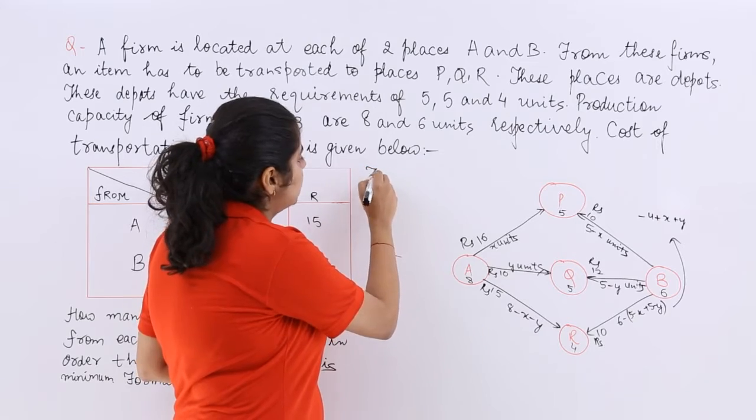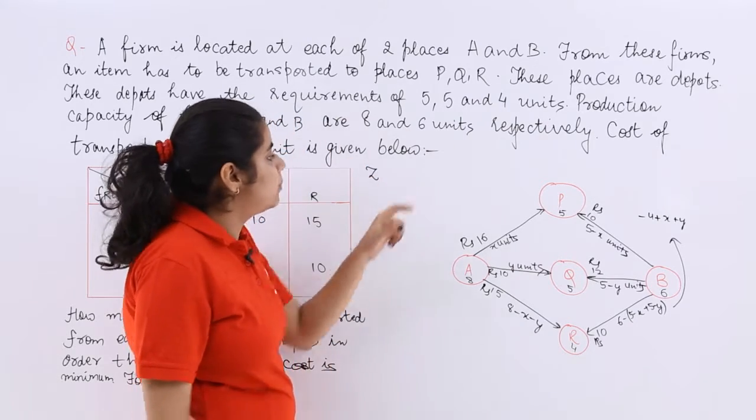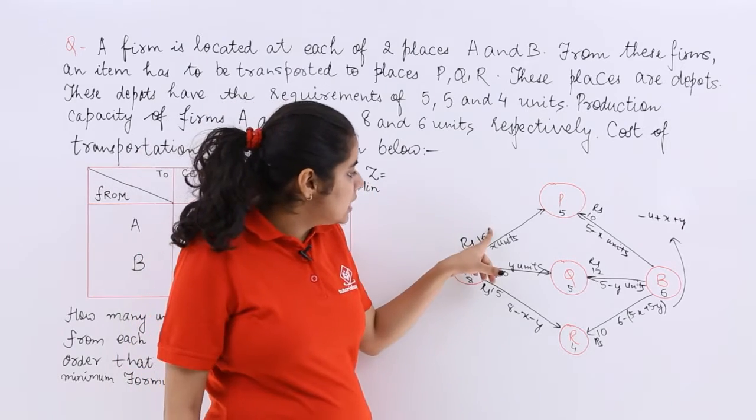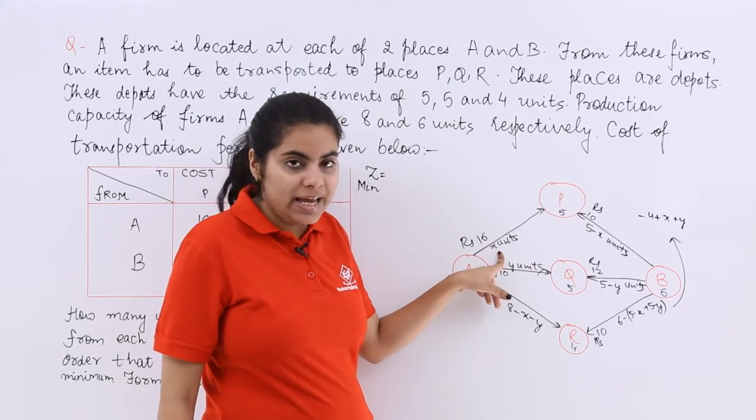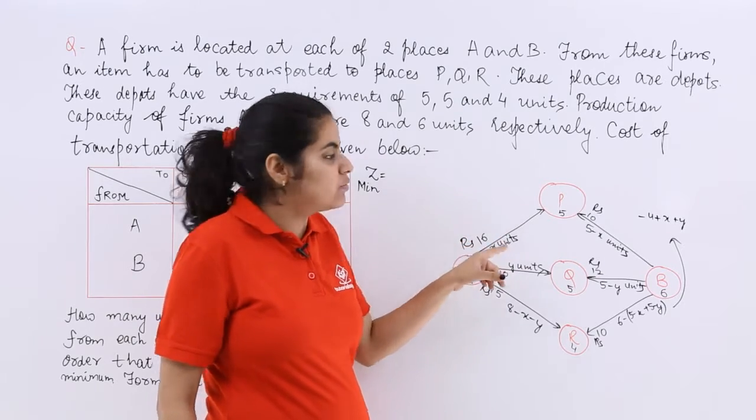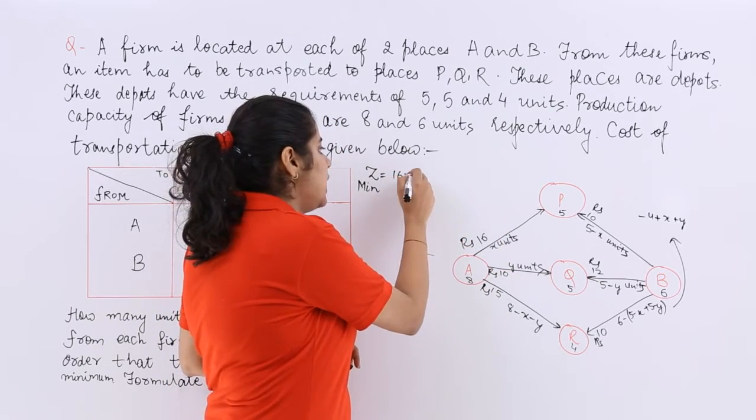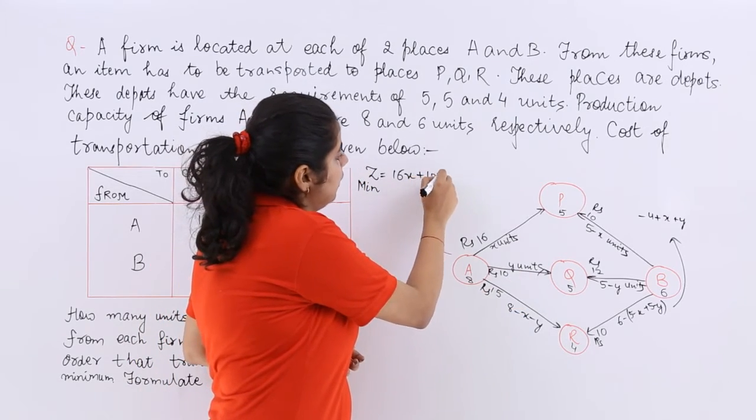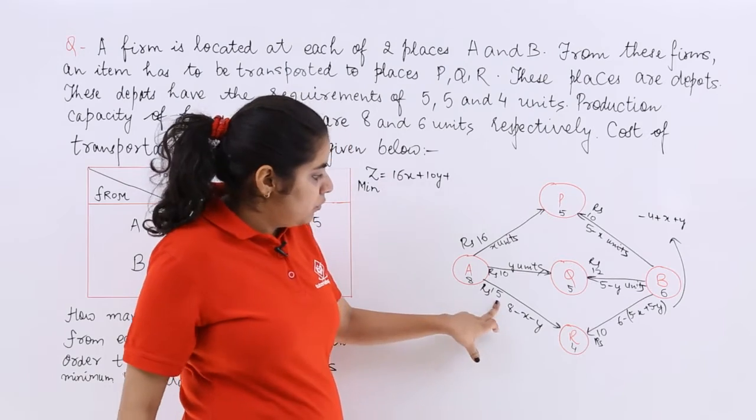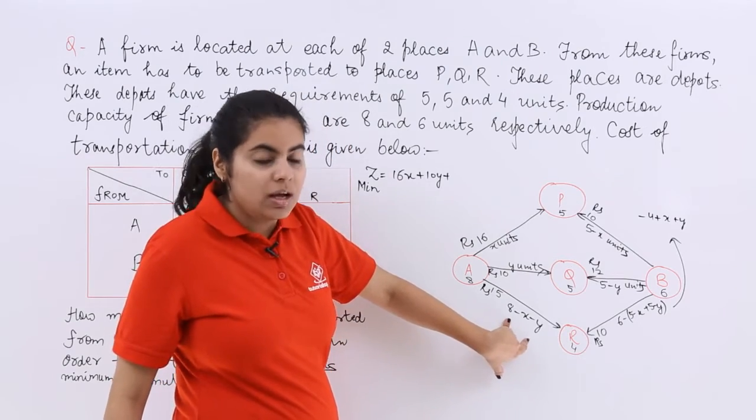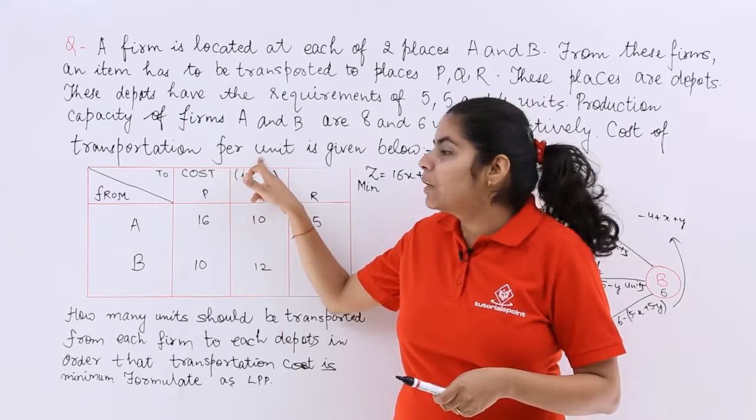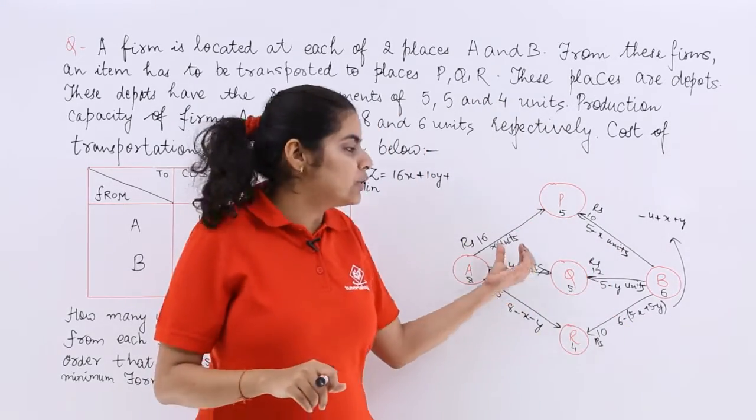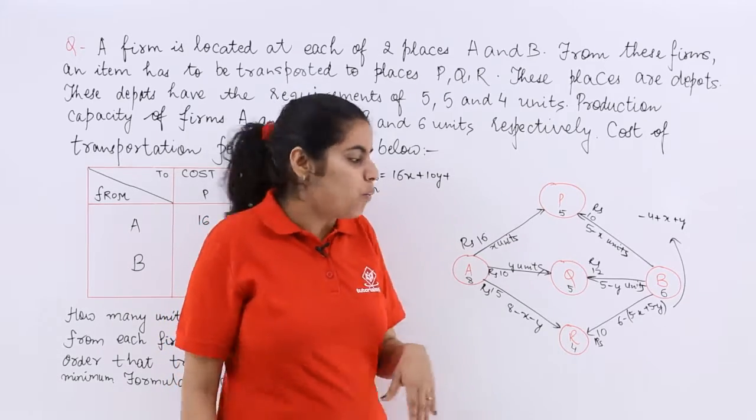I know that what is my objective function that is Z and I am supposed to minimize the cost required for Z. Now as you can see 16 rupees and X units. So for 1 unit it is 16 units. For X unit it is 16X rupees not units. Then 10Y so plus 10Y plus 15 into this whole thing. My dear students let me tell you it says per unit. So cost for 1 unit is given. If you have X units you will multiply by X. If you have Y units you will multiply by Y.